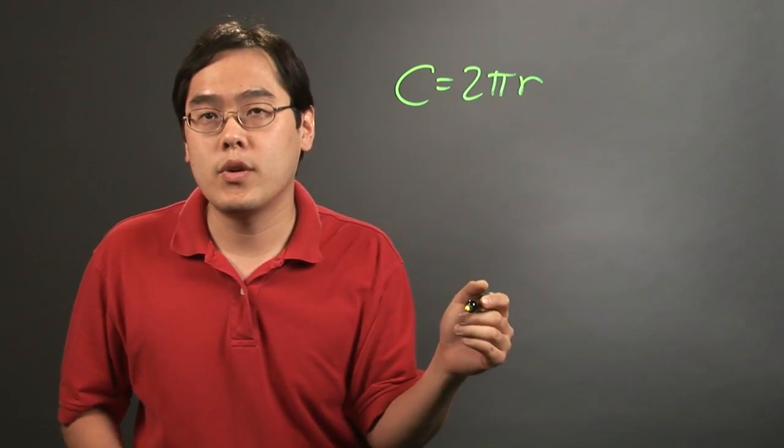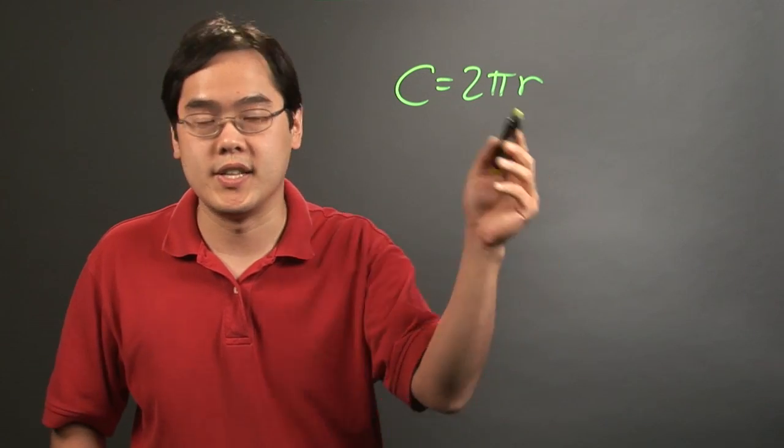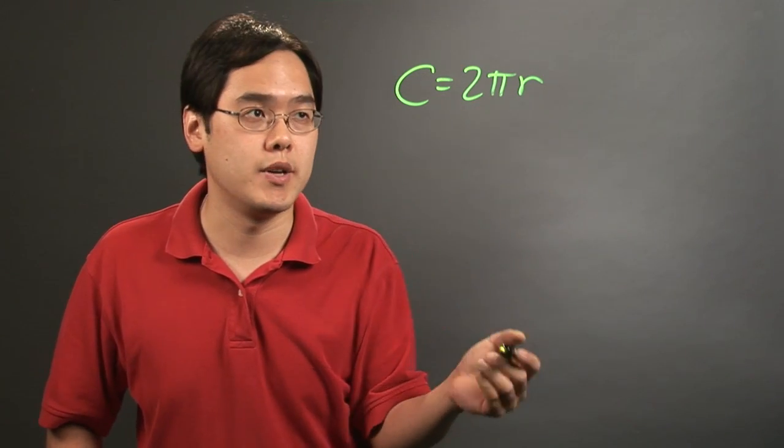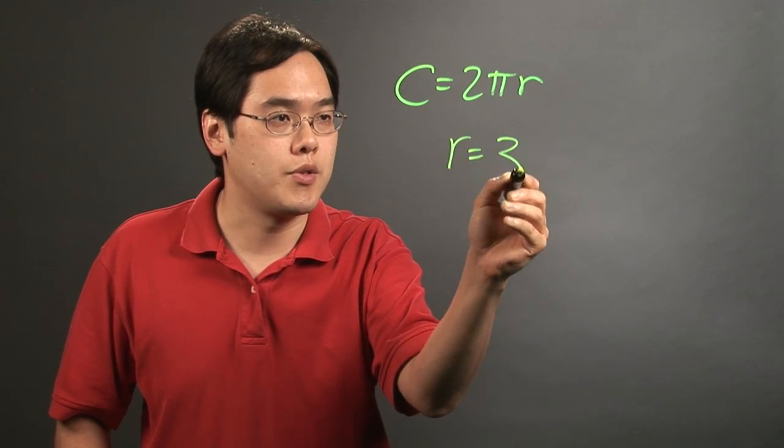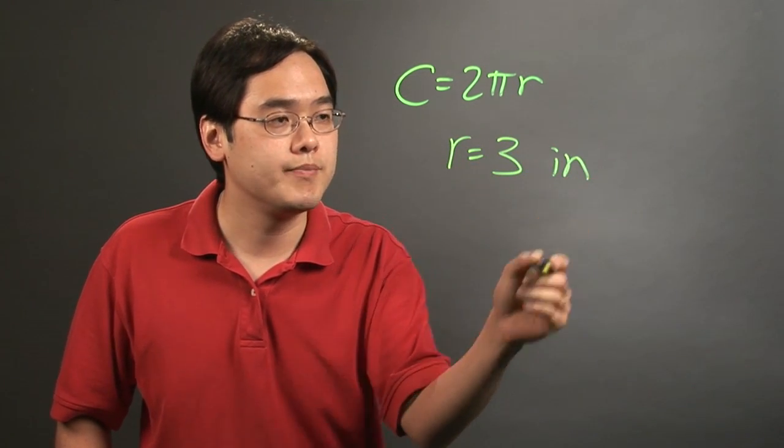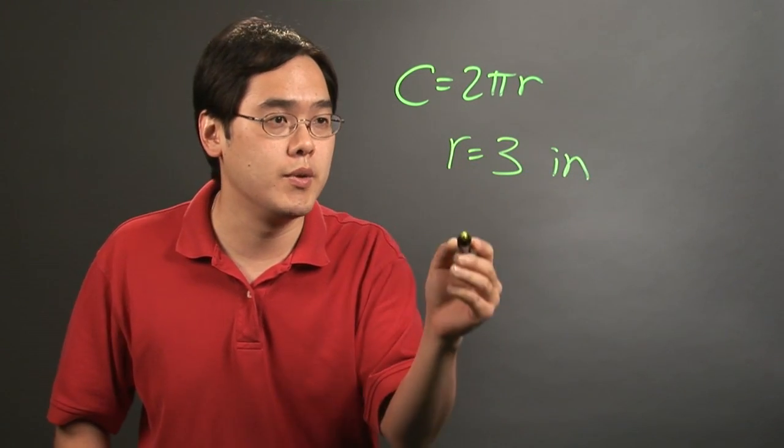Now if you want to find the circumference of that window, you want to find the distance around, so this is a good measurement. Basically if you have the radius, let's just say r = 3 inches depending on how big or small the window is, just plug it in.